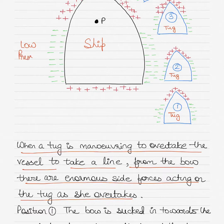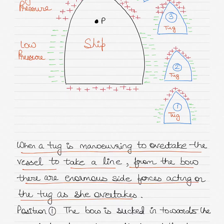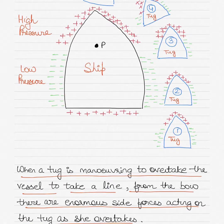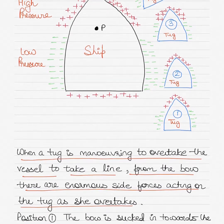So this is a low pressure zone and this is a high pressure zone. For each vessel, the high pressure zone is denoted by the red crosses and the low pressure zone is denoted by the green minuses. What a ship encounters in terms of high and low pressure, similar pressure zones are encountered by the tug as well, as you can see in the diagram.